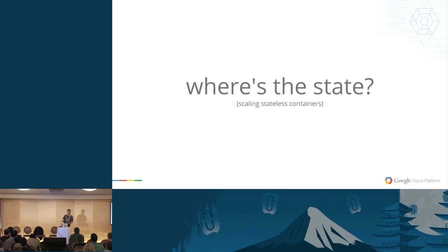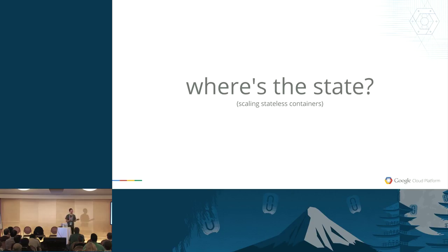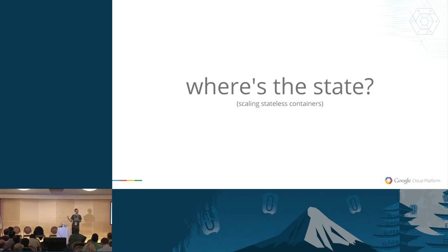I did mention the database — there's also a memcache I started up. And there's configuration for my application: how does my PHP application know where the database is, what the name of the database is, or what the name of the service is for memcache? There's also one more interesting type of state: the state of the cluster itself — how many pods are running, what services there are. That's also a piece of state that's somewhere.